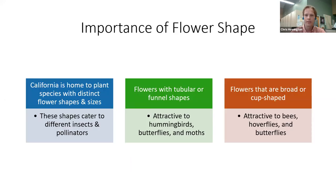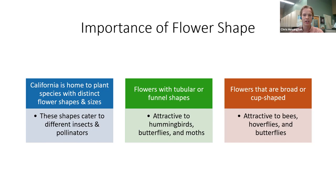Another extremely important consideration beyond diversity is flower shape. The morphology of California flowers is so vast and varied. All these flower shapes cater to different insects and pollinators. Tubular or funnel-shaped flowers — for example, a fuchsia, columbine, or delphinium — are going to be more attractive to hummingbirds, butterflies, and moths, because at the very base of these flowers is where the nectar is secreted. The insects and animals most successful with these flowers have the longest tongues or beaks to reach down and get the nectar they're looking for.